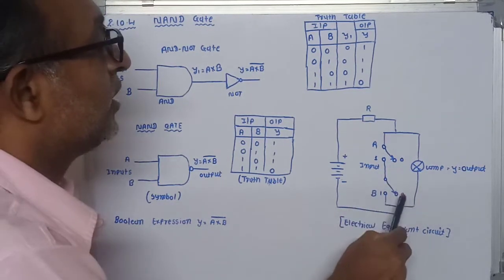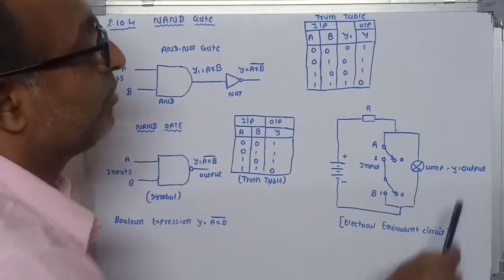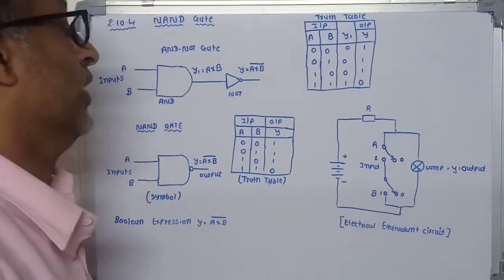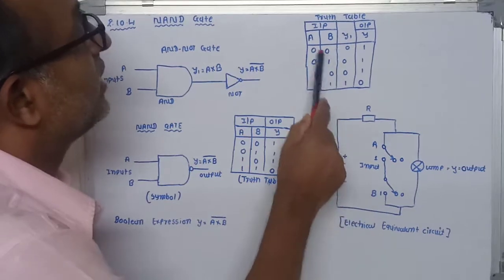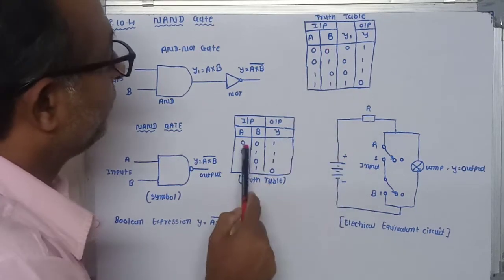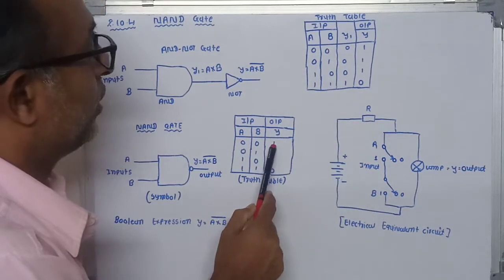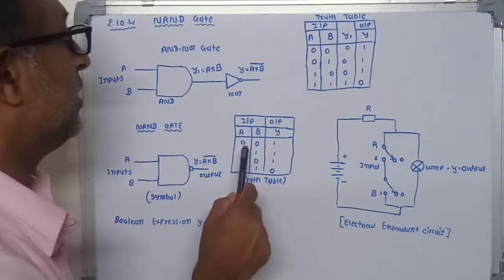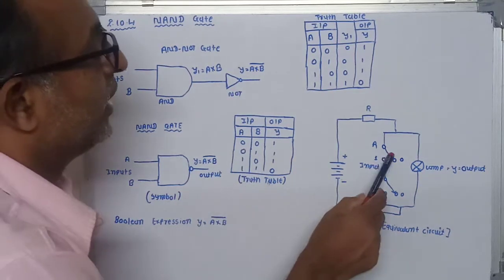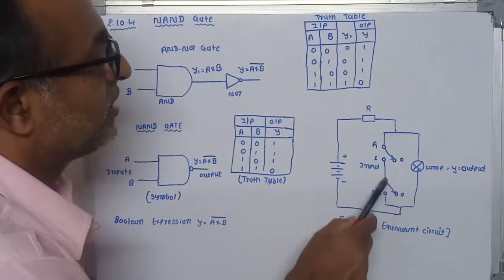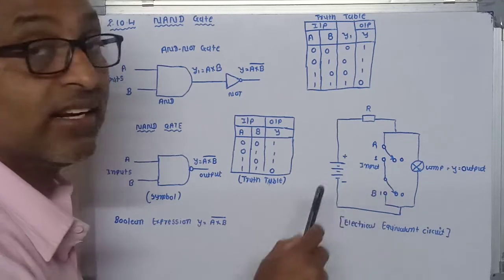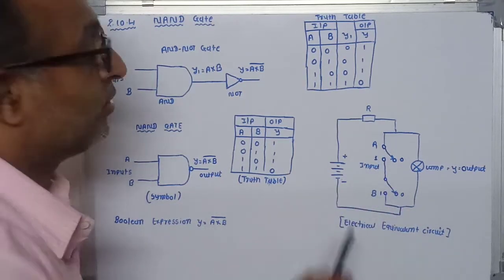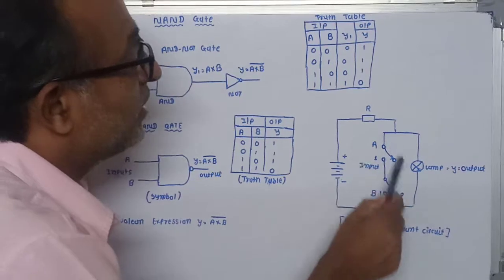When both switches are at zero position, the circuit is open. Due to this voltage, current starts to flow through the lamp and it turns on. So when both inputs are zero, the lamp is ON — meaning the output is one. If any one input is zero, for example A is zero and B is one, switch B is closed but there is still an open circuit through switch A.